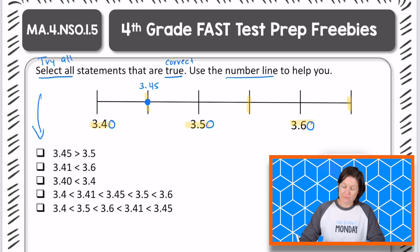And then we have 3.5 tenths is right here. So is 3.45 hundredths greater than 3.5 tenths? No, it's not. It is less than. It should be going the other way. So we can eliminate this one. It is not true.